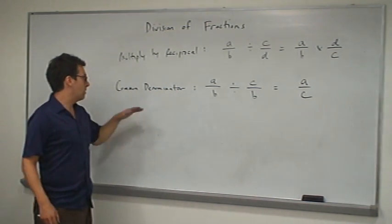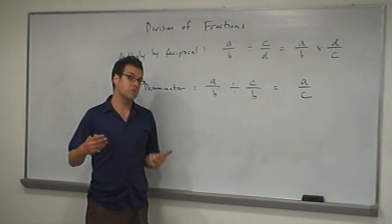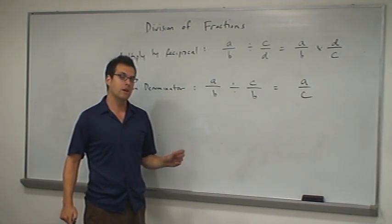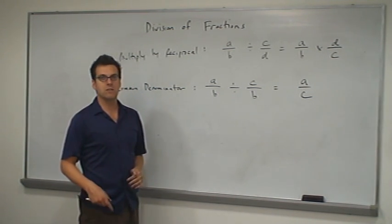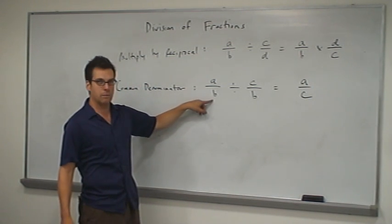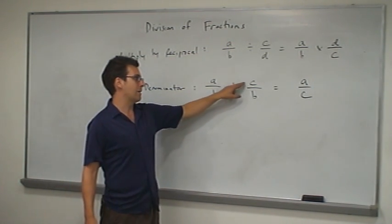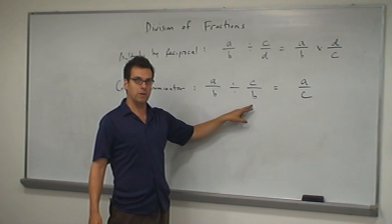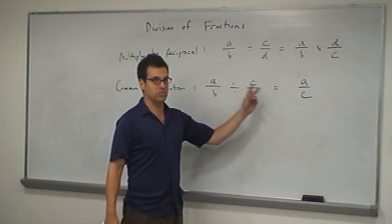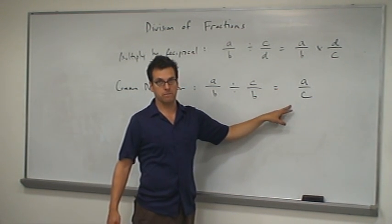On the other hand, we just learned a common denominator method, which tells us first that we can't divide fractions unless we have a common denominator, and second, how to do so when we do have one. If we have a common denominator B and a fraction A over B divided by C over B, then we divide straight across the top and obtain the fraction A over C as our answer.